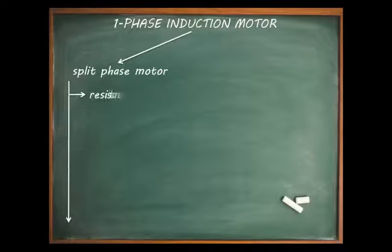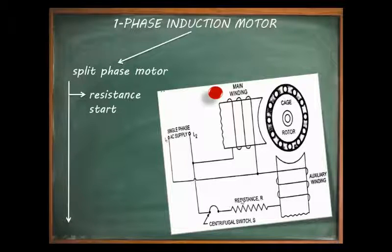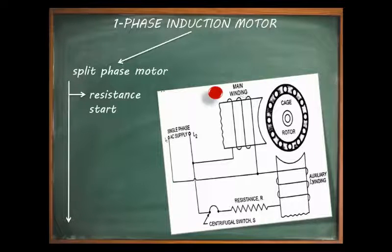The first type is the resistance start single phase induction motor. Every split phase induction motor has two windings: the main winding and the auxiliary winding. The auxiliary winding is used for starting of the motor.